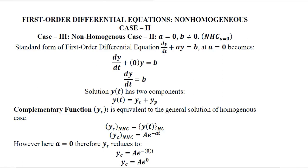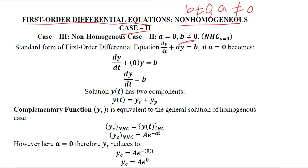After understanding the second case of the first order differential equation, which was the non-homogeneous case 1 in which b was not equal to 0, neither was a. We are going to do the final case, the third case. Within the non-homogeneous cases, this is the second case, and the non-homogeneous case requires that the right hand side is not equal to 0. However, a is now permitted to be 0, so it becomes a non-homogeneous case where a is equal to 0.